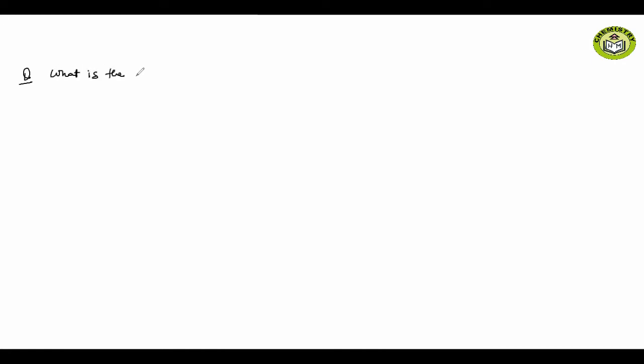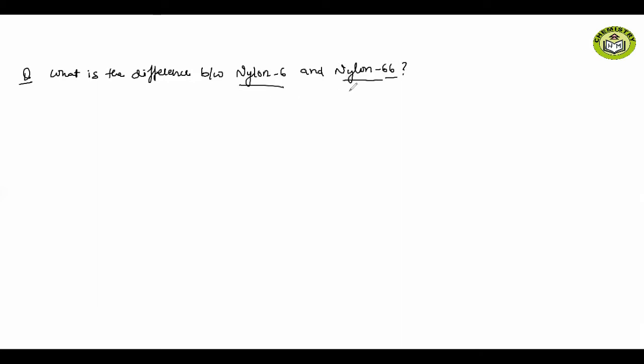Before starting, there is a very important question: what is the difference between Nylon 6 and Nylon 6,6? Basically, the answer is that Nylon 6 is prepared from caprolactone, whereas Nylon 6,6 is prepared from hexamethylene diamine and adipic acid. So now my next topic is the first type of mechanism.